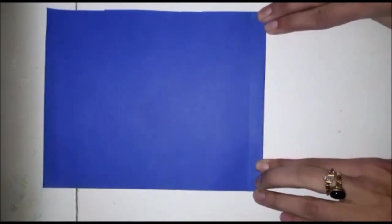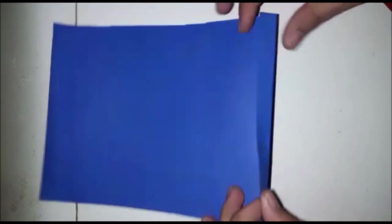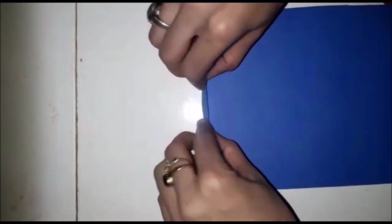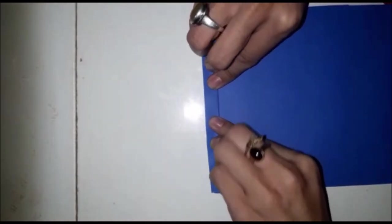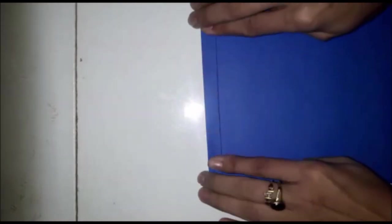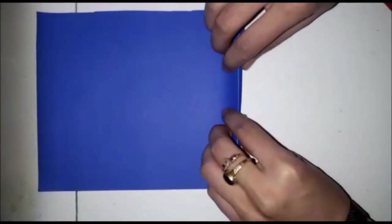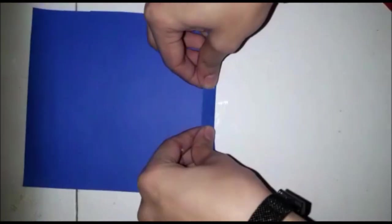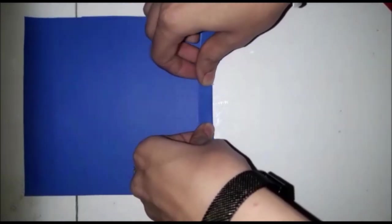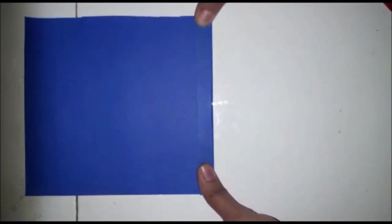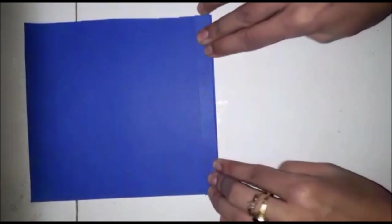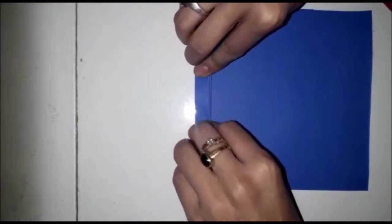And what next? Now we have to make a paper fan. First you have to fold it like this, small fold, and fold it back. How we have to make paper fan? First we have to fold it right side and then back side, left side.